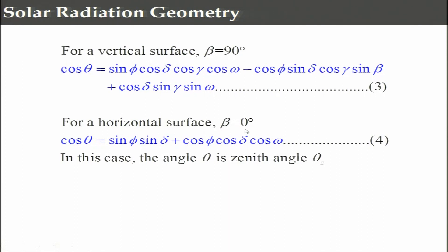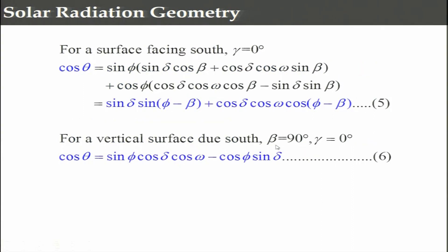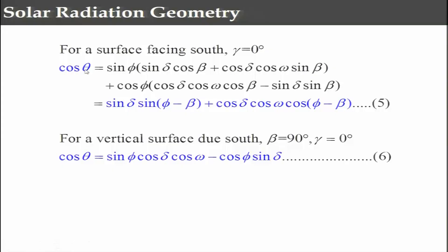For a horizontal surface, beta becomes 0 degrees, so all sin(beta) and cos(beta) terms simplify, giving: cos(theta) = sin(phi)sin(delta) + cos(phi)cos(delta)cos(omega). Here phi is position-dependent, delta is the declination angle, and omega is the hour angle - everything is easily determinable. For a surface facing south, gamma = 0, and the equation simplifies to: cos(theta) = sin(delta)sin(phi - beta) + cos(delta)cos(omega)cos(phi - beta), where beta is inclination, phi is position-dependent, delta is day-dependent, and omega is time-dependent.